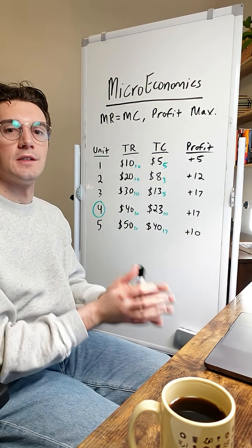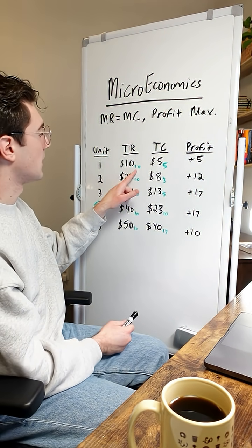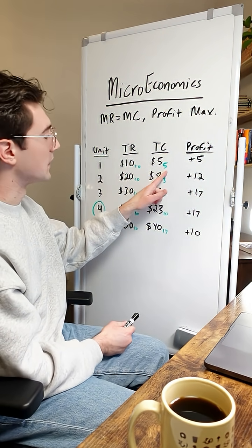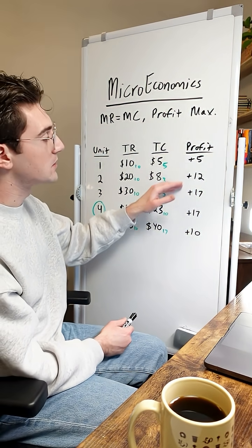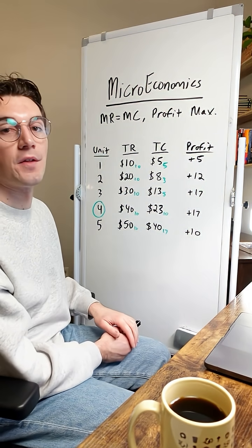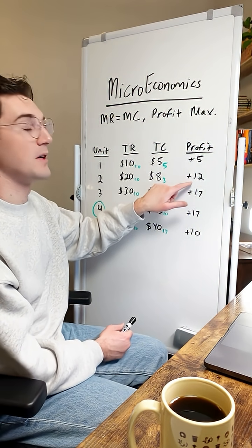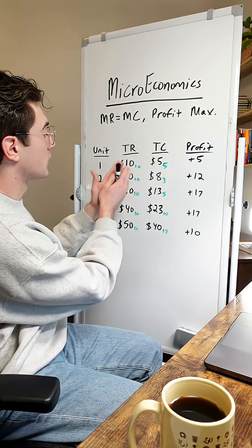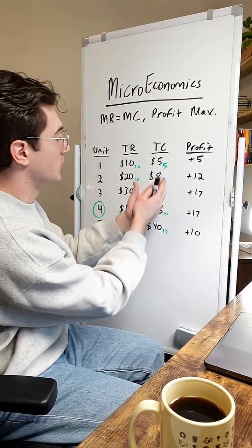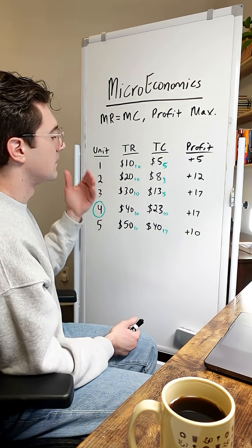The first thing to understand is that when marginal revenue was greater than marginal cost, we were essentially leaving profit on the table, because producing that next unit generated more profit. So whenever marginal revenue is greater than marginal cost, keep outputting units.